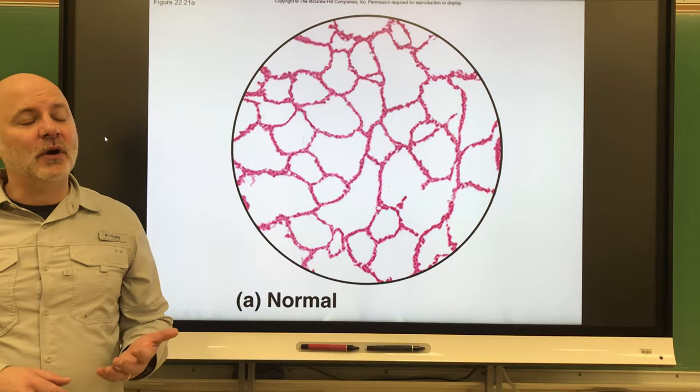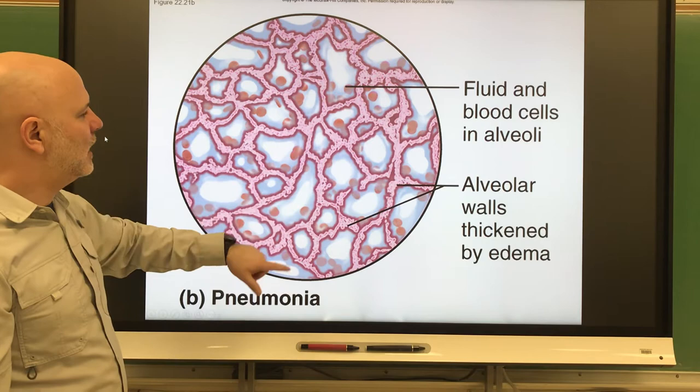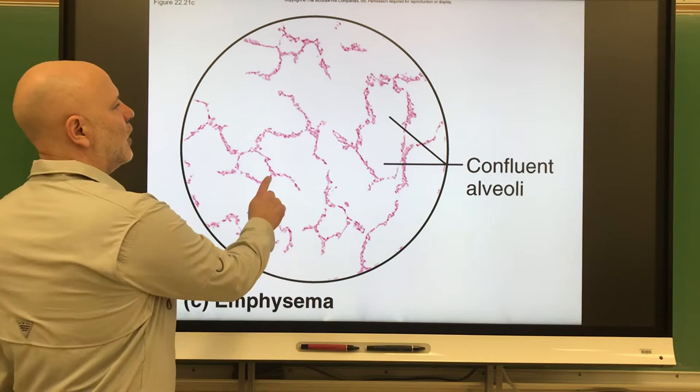This is looking at a normal lung slide. We see a lot of alveoli here. This is showing pneumonia, where you have water and fluid accumulation, but this is showing emphysema here.